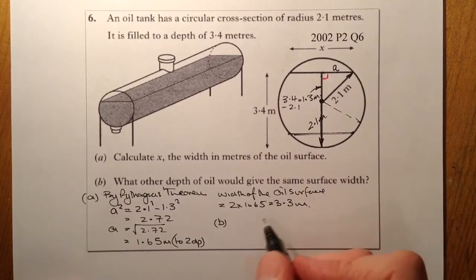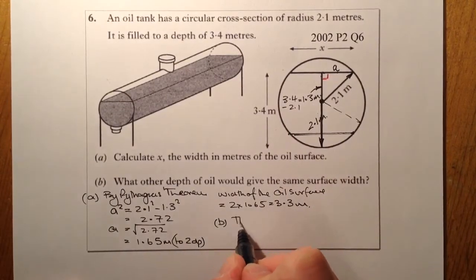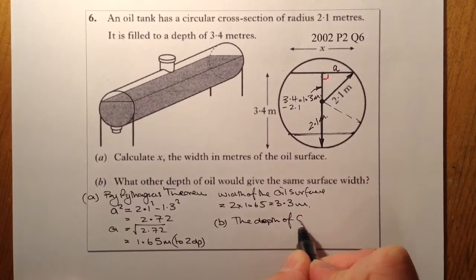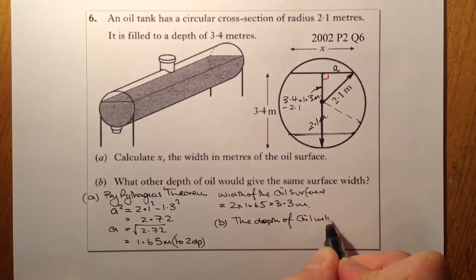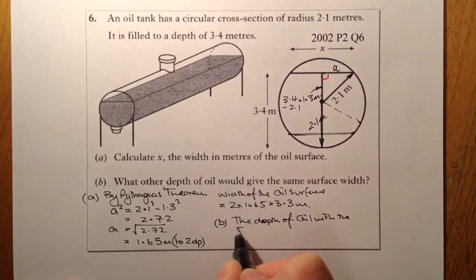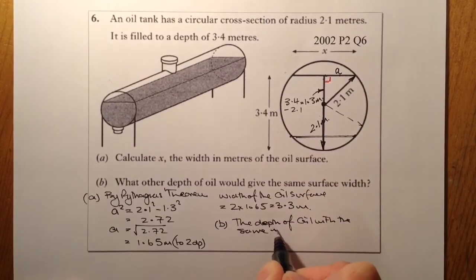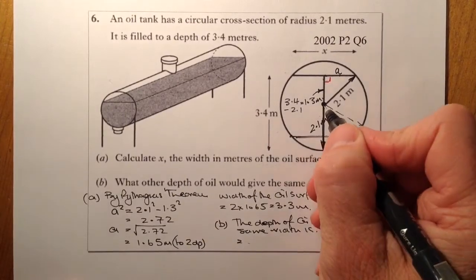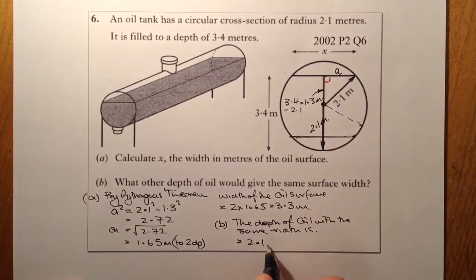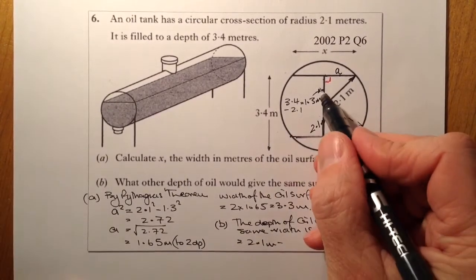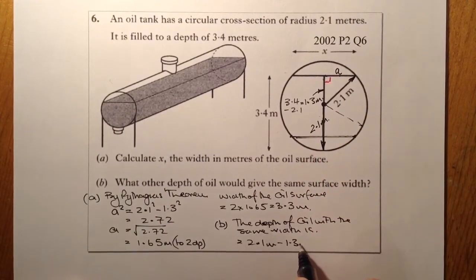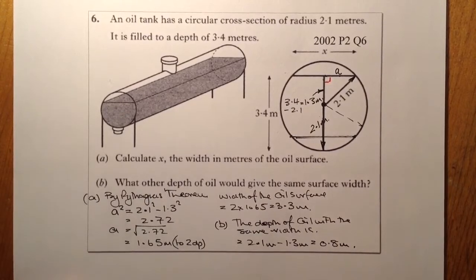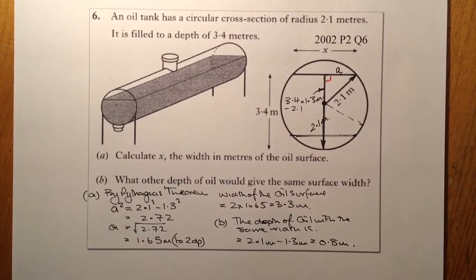So the other width, the depth of oil with the same width is going to be given by, I know that's going to be 2.1 metres. And what I'll do is I'll subtract 1.3 metres from that. And that should give me 0.8 metres. And that would be that equation complete.